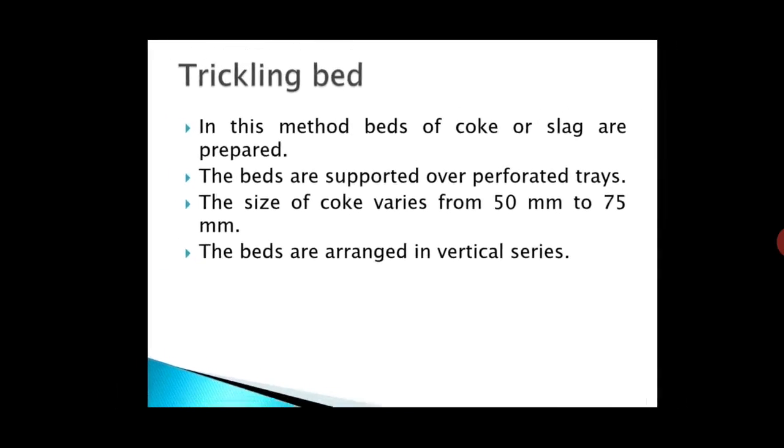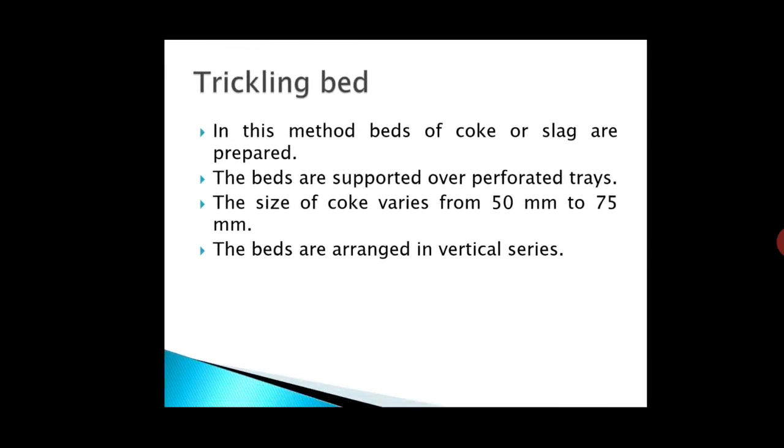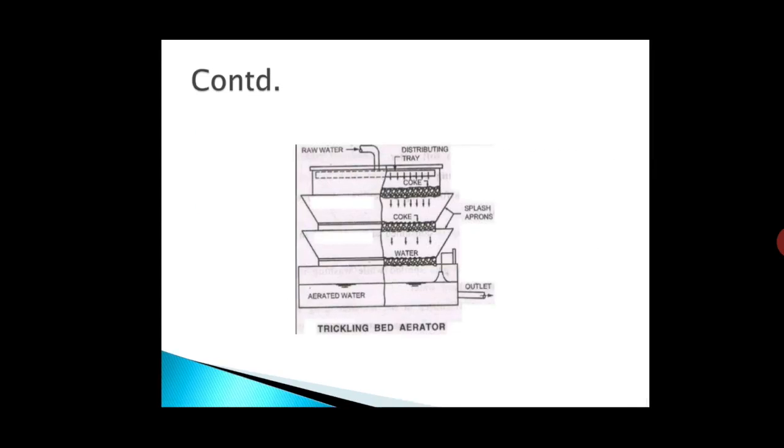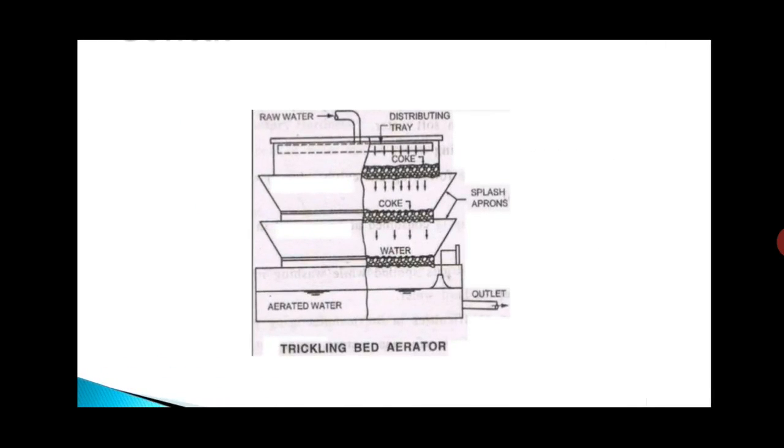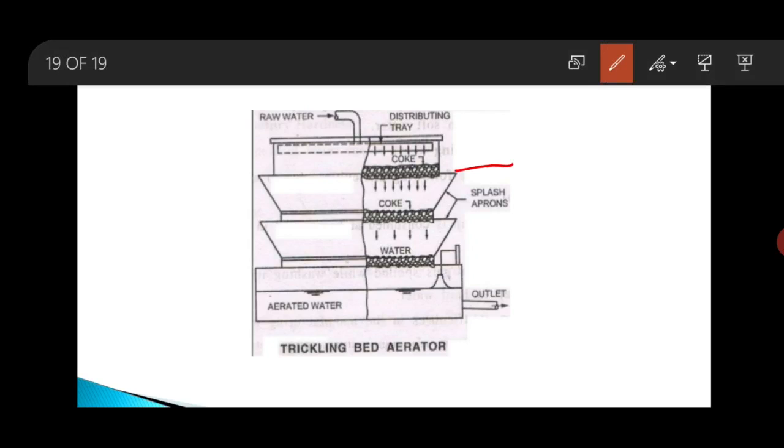The next method is trickling bed. In this method, the beds of coke or slag are prepared. Here you can see, these are the beds of coke. The beds are supported over perforated trays. The size of the coke varies from 50 to 75 mm, and the beds are arranged in vertical series.